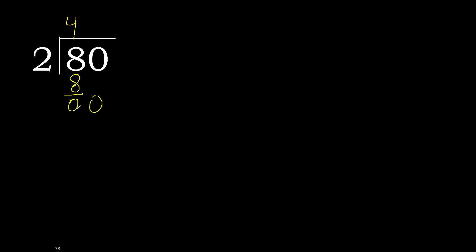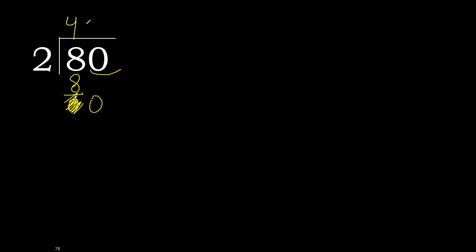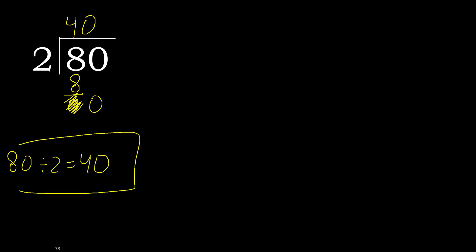Next, eliminate the 0 on this side. 0 is less, therefore next. There is no number, therefore finish it — finish it with this number. Therefore complete with 0. 80 divided by 2 is 40.